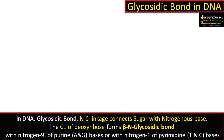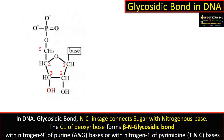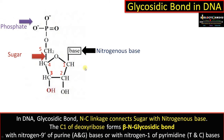Let's begin with the structure of the nucleotide. A nucleotide consists of a deoxyribose sugar, a phosphate group, and a nitrogenous base. In DNA, this deoxyribose sugar is connected to the nitrogenous base through a glycosidic bond.